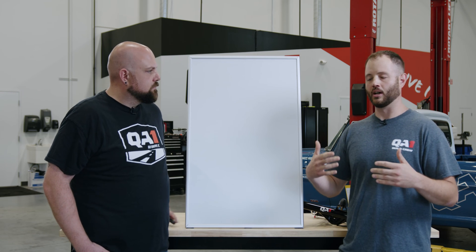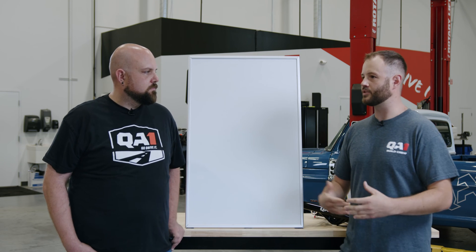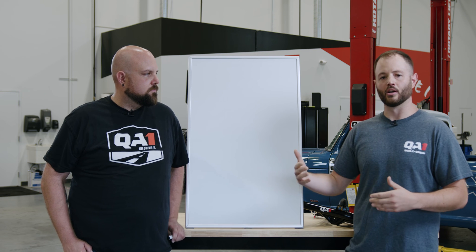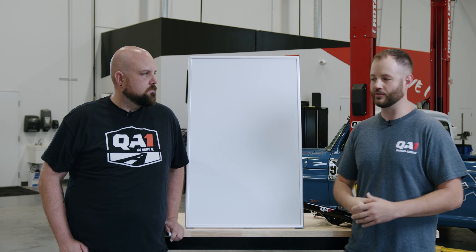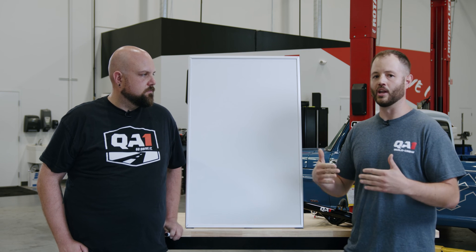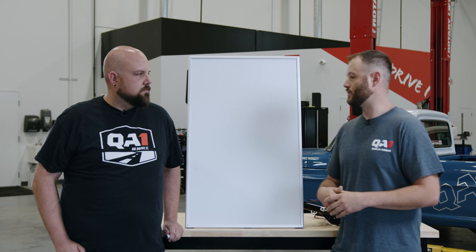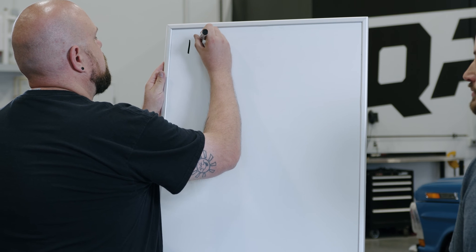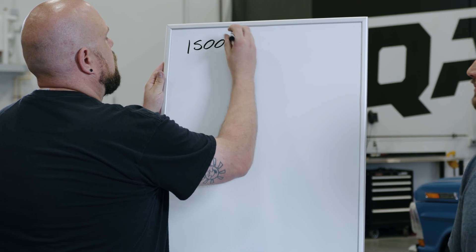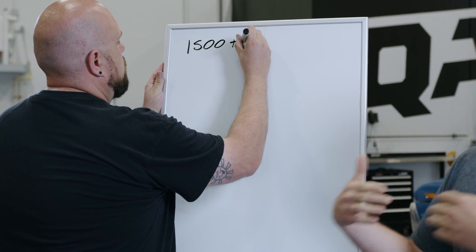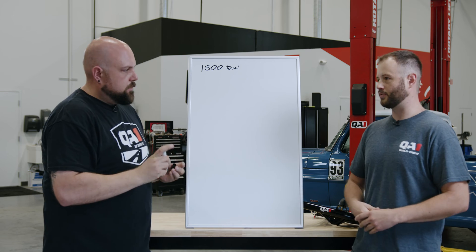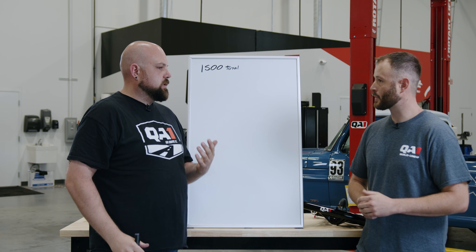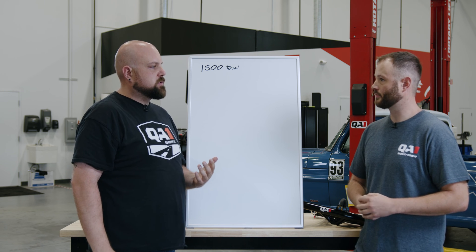We've got to start out with vehicle weight — more specifically, we need to know the front end weight. In this example, let's say my front end weighs 1500 pounds total. I rolled it on a set of scales and got 1500 pounds. With any suspension, what we need to know is the amount of weight that is actually being supported by the springs.